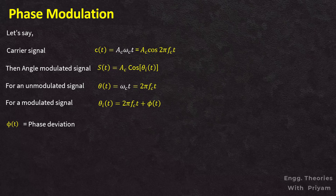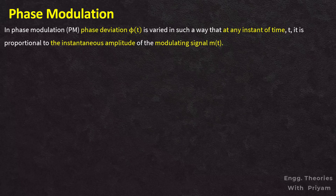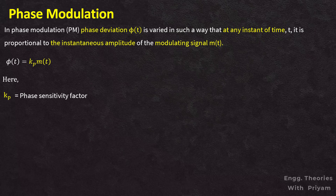This change in phase is called the phase deviation. Phase modulation is the form of angle modulation in which the phase deviation φ(t) is varied such that at any instant of time it is proportional to the instantaneous amplitude of the modulating signal m(t). So φ(t) = kp·m(t), where the constant kp is the phase sensitivity factor of the modulator.